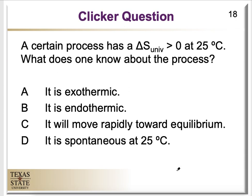A clicker question: a certain process has an entropy change of the universe that is greater than zero at 25 degrees Celsius. The key thing here is that the entropy change of the universe is greater than zero. The answer is that it is spontaneous at 25 degrees Celsius. If you have an entropy change for the universe that is greater than zero, that means you have a spontaneous process.